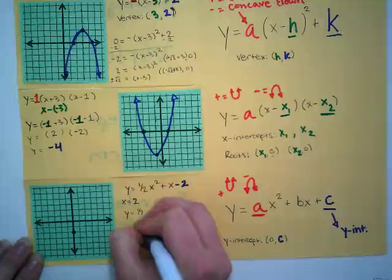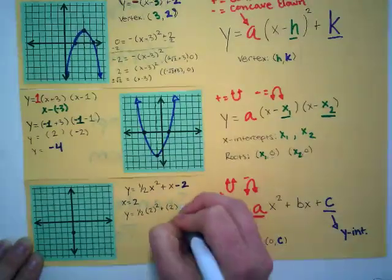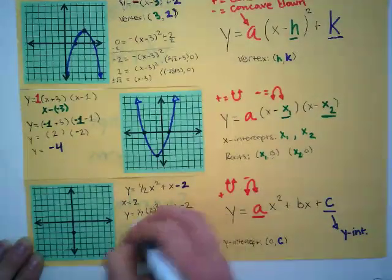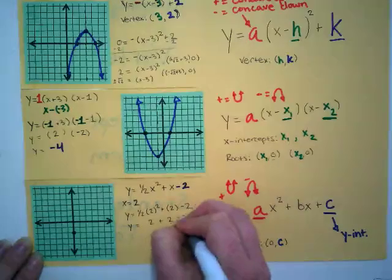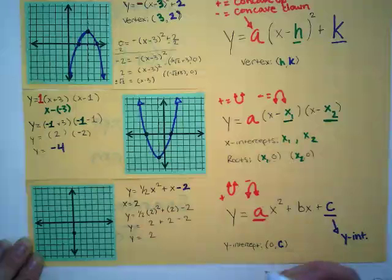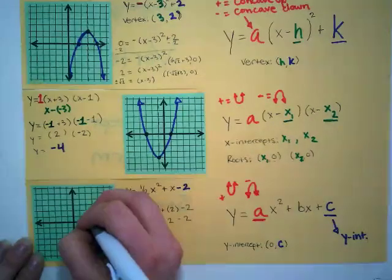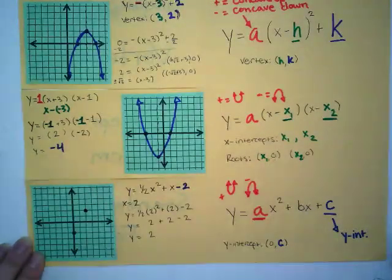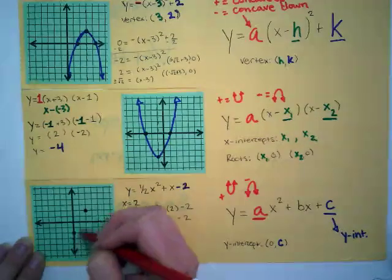I'll plug in X equals 2: Y equals one-half times 2 squared plus 2 minus 2. Two squared is 4 times one-half is 2. So Y equals 2 plus 2 minus 2, which equals 2. My Y-value is positive 2, so I can plot the point (2, 2). It looks like my parabola is going to be concave up in this direction.